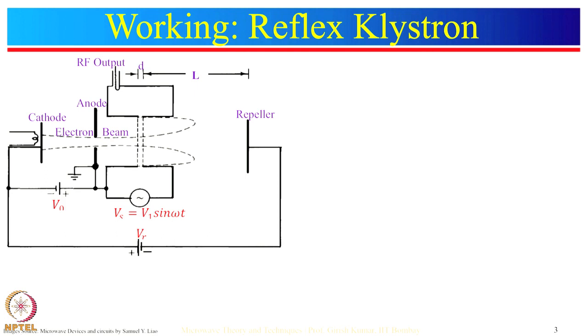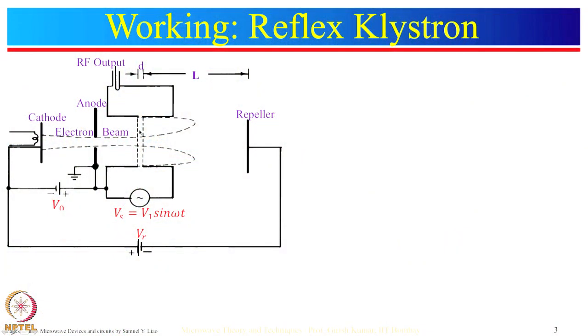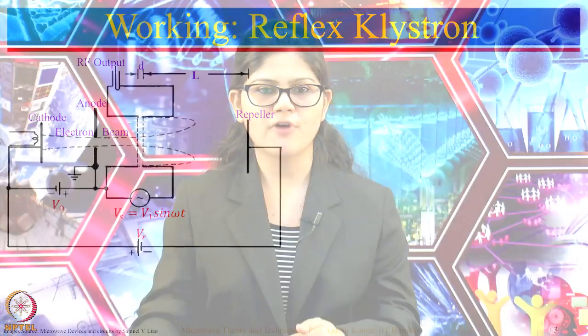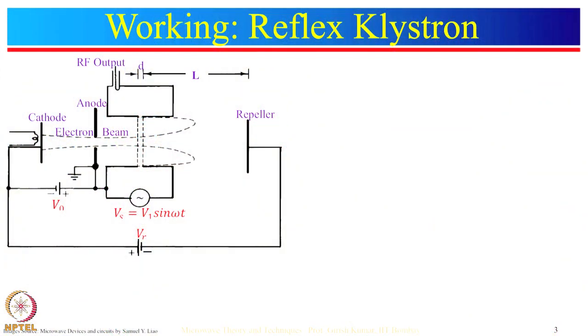Because of velocity modulation and repulsive force from the repeller plate, bunching of electrons takes place during the return journey. We want the bunching of electrons to occur at the center of the cavity gap, and the timing should be such that the phase of the gap voltage is retarding. This ensures maximum power transfer from electrons to the cavity, which sustains oscillations. This is how oscillations are maintained in the reflex klystron by the to-and-fro movement of electrons between the cavity and the repeller space.